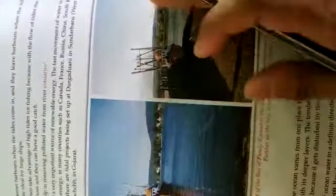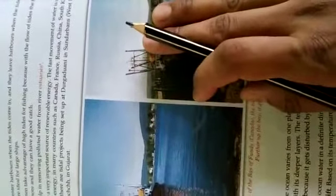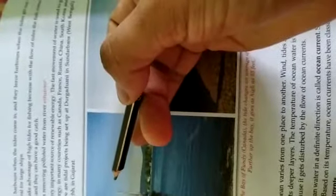Ships enter harbors when tides come in and leave when tides go out. High tides are ideal for large ships. Fishermen take advantage of high tides for fishing because with the flow of tide, fish come closer to shore and they can have a good catch. Tides help in removing polluted water from river estuaries. Tides are a very important source of renewable energy. The fast movement of water is used to generate electrical energy in many countries such as Canada,